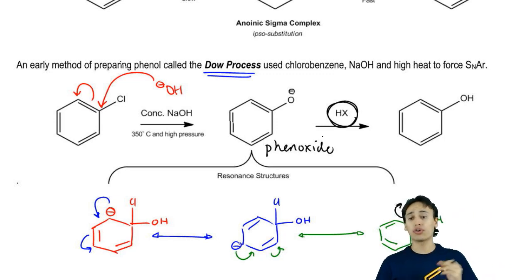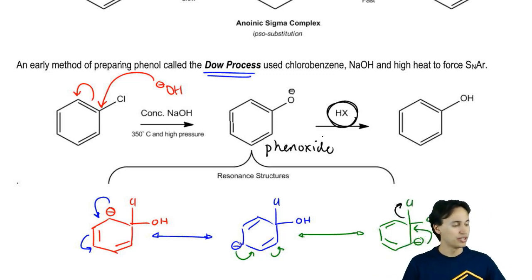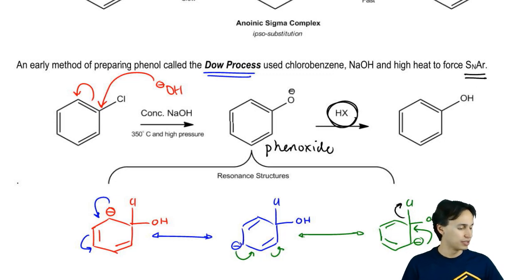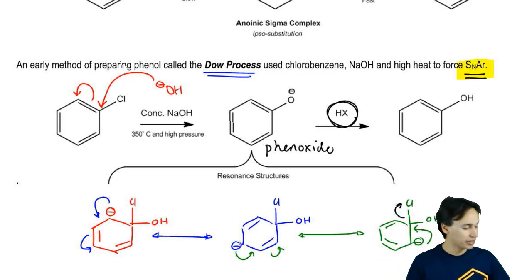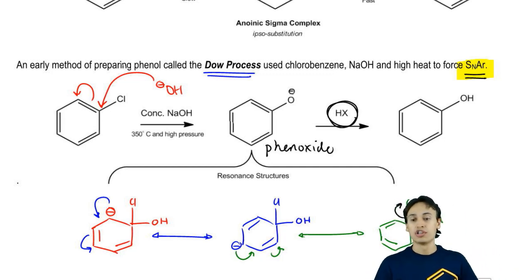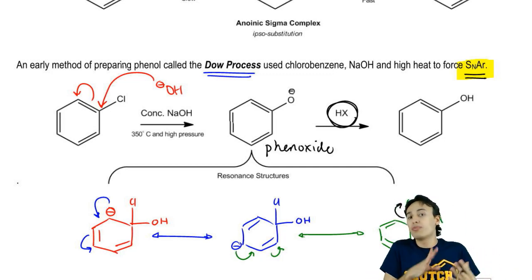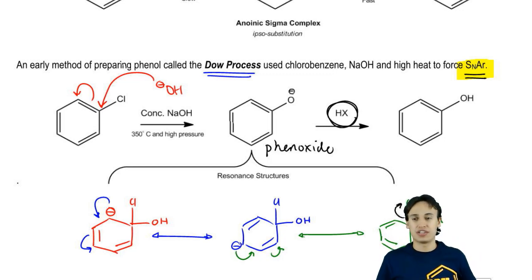This was an early method of making phenols that used the SNAr mechanism, but it wasn't very efficient. This is not how modern-day phenols are made — they're made much more simply in other ways. Now that we understand the general mechanism of SNAr, let's explore it a little bit more on the next page.